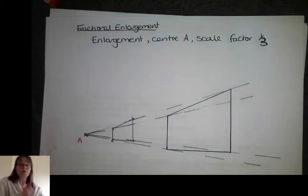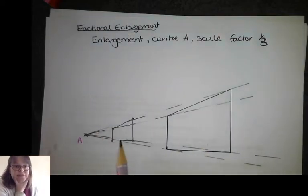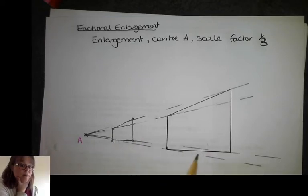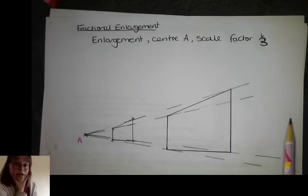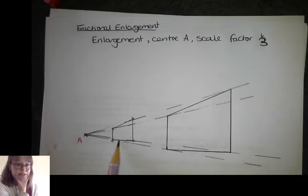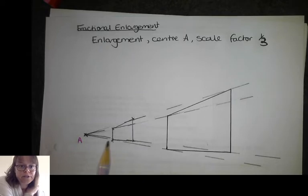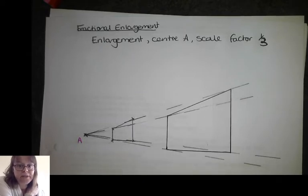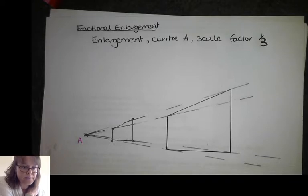Okay so this time you can see that the shape has actually got closer to the cross. If the scale factor is a fraction then the shape gets smaller but it also goes inside these lines, instead of going out like last time. So again I want you to pause the video here and go and find the one on the PDF with the scale factor of a half and see if you can do something similar.